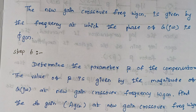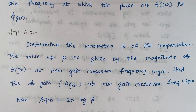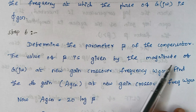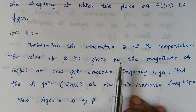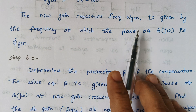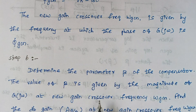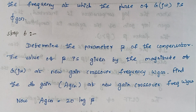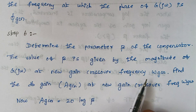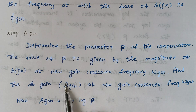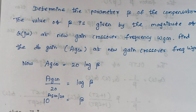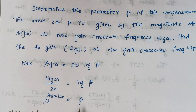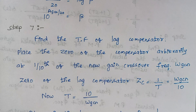Step 6 is to determine the parameter beta. Beta is the magnitude of G(j*omega) at the new gain crossover frequency. We find the decibel value A_GCN at the new gain crossover frequency, where A_GCN = 20 log(beta). By rearranging this, we calculate the value of beta.